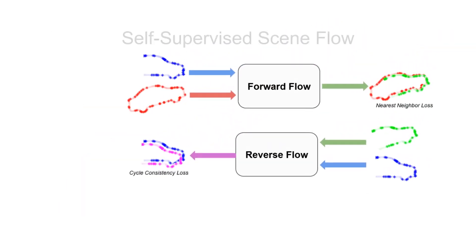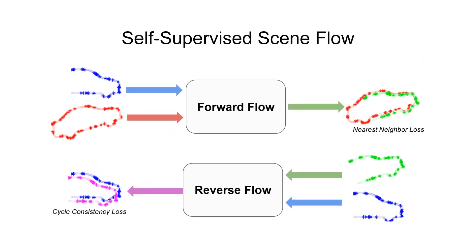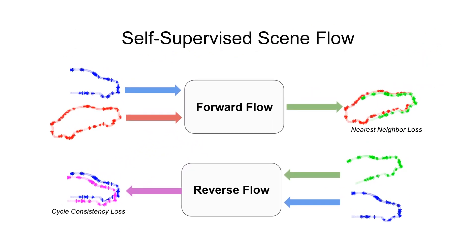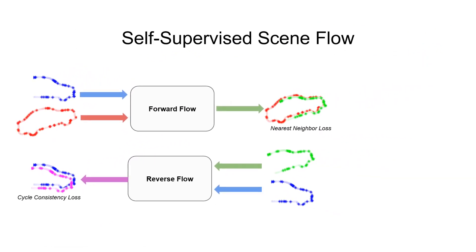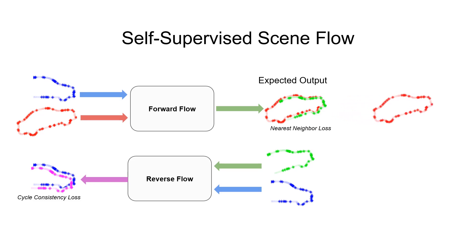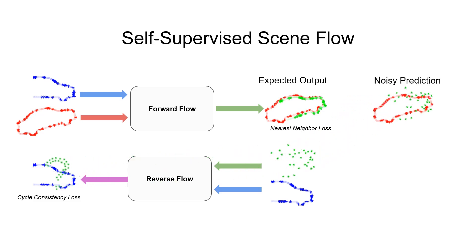One problem with the pipeline, as described, is that it assumes the projected clouds look similar to the real sensor data, when in fact they can be quite noisy. This is particularly harmful when the noisy cloud is used to compute the reverse flow, as the network is intended to compute the flow between two realistic point clouds.